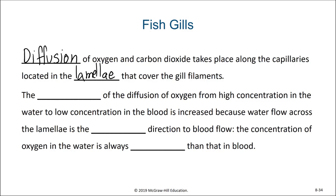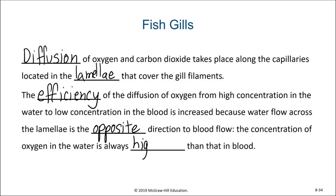The efficiency of the diffusion of oxygen from high concentration in the water to low concentration in the blood is increased because water flow across the lamellae is in the opposite direction to the blood flow. The concentration of oxygen in the water is always higher than that in the blood, and so diffusion promotes that movement of oxygen into the blood.